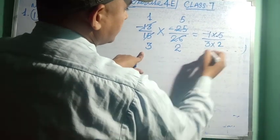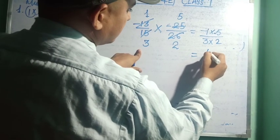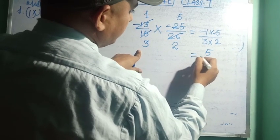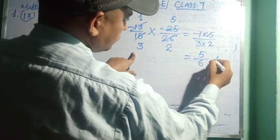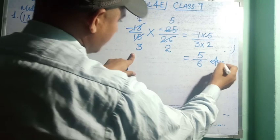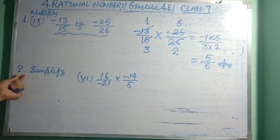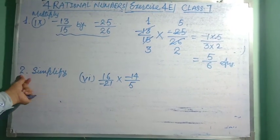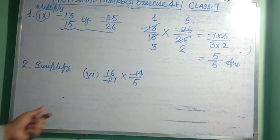Minus into minus becomes plus. The result is 5 divided by 2, giving us the answer. I hope you understand. Now the next question, number 2 — simplify. This is the same type as the question above.